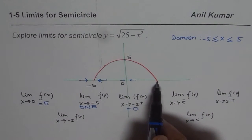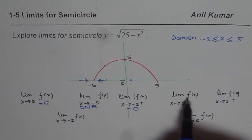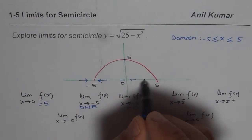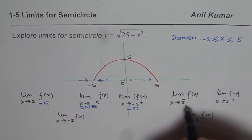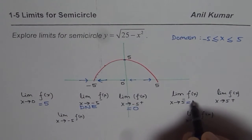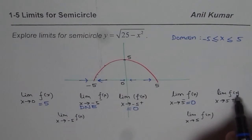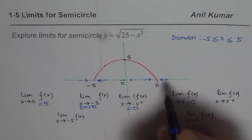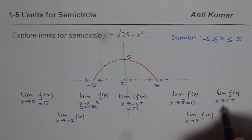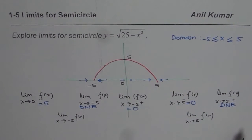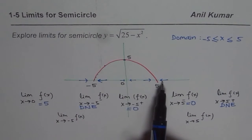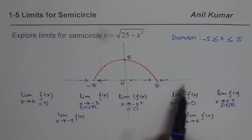Now let us look into that point. When we are trying to find the limit of the function as x approaches 5 from the negative side — that means from the left — then you are approaching 0, so this answer is 0. And the last one is limit of the function when x approaches positive 5 from the right side. Again, it is not defined there, so that limit does not exist.